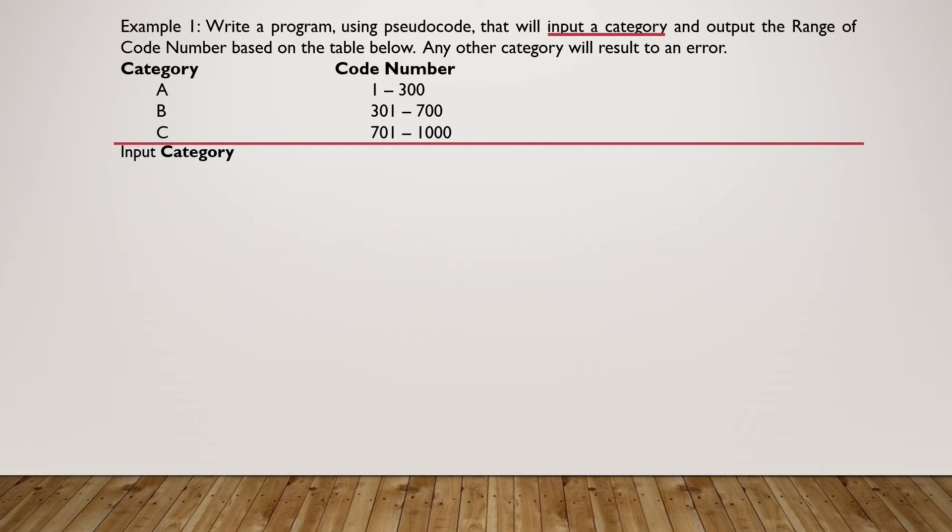So input Category, and then we are going to check whether this category falls in these three values. To do that, we are going to make use of the Select Case Statement, so we are going to select Category, and we'll be having several cases. For case A, if the category is equal to A, then we are going to output the range of code numbers 1 to 300.